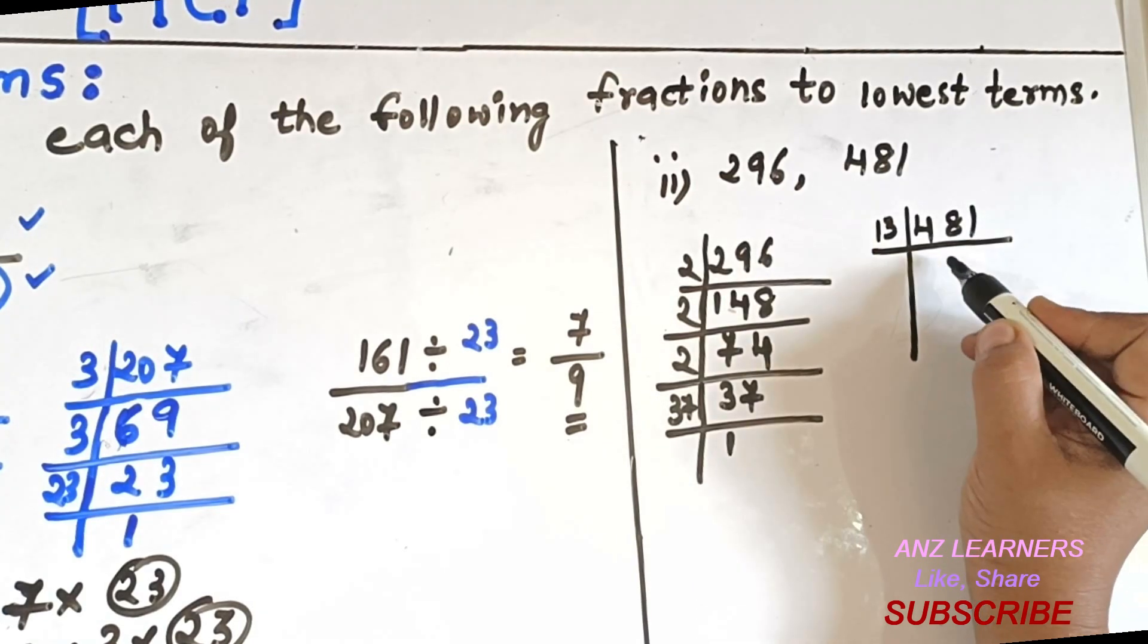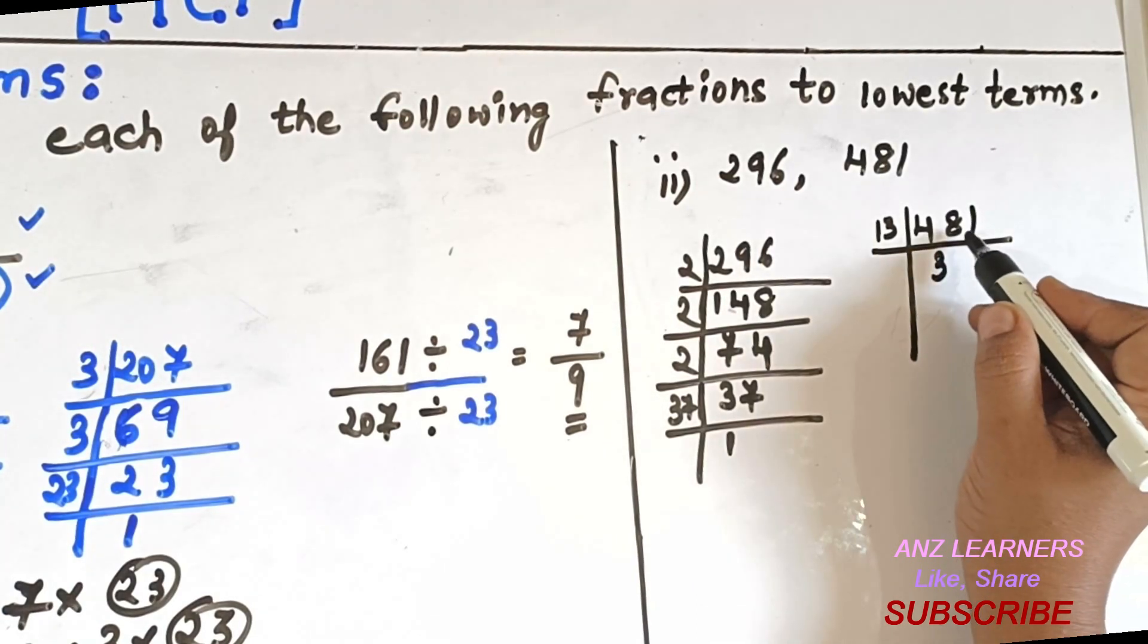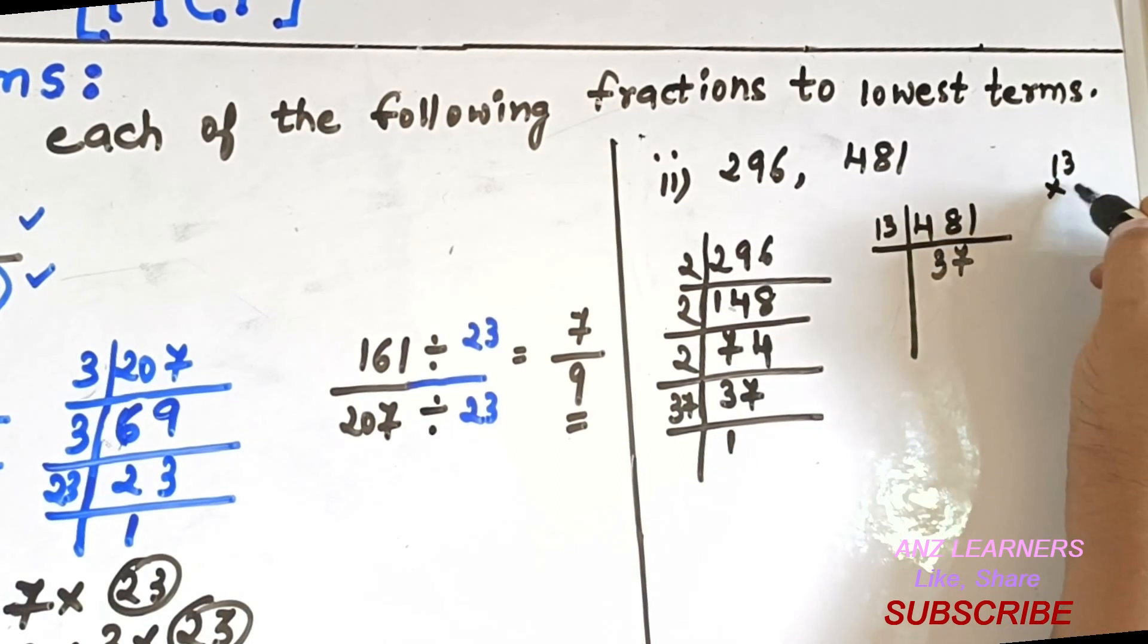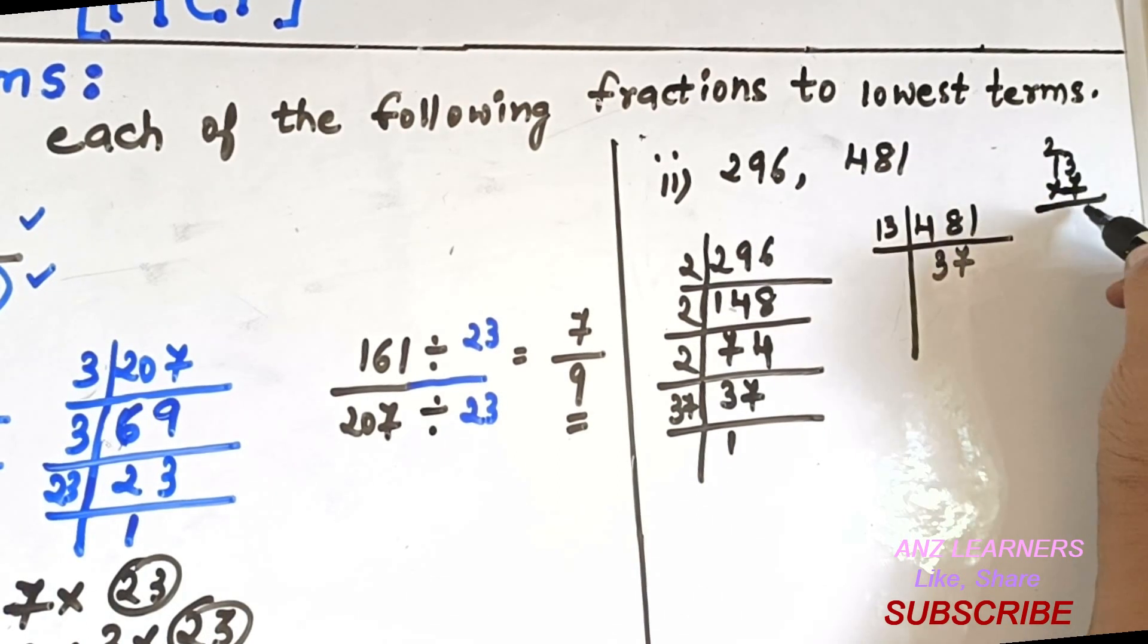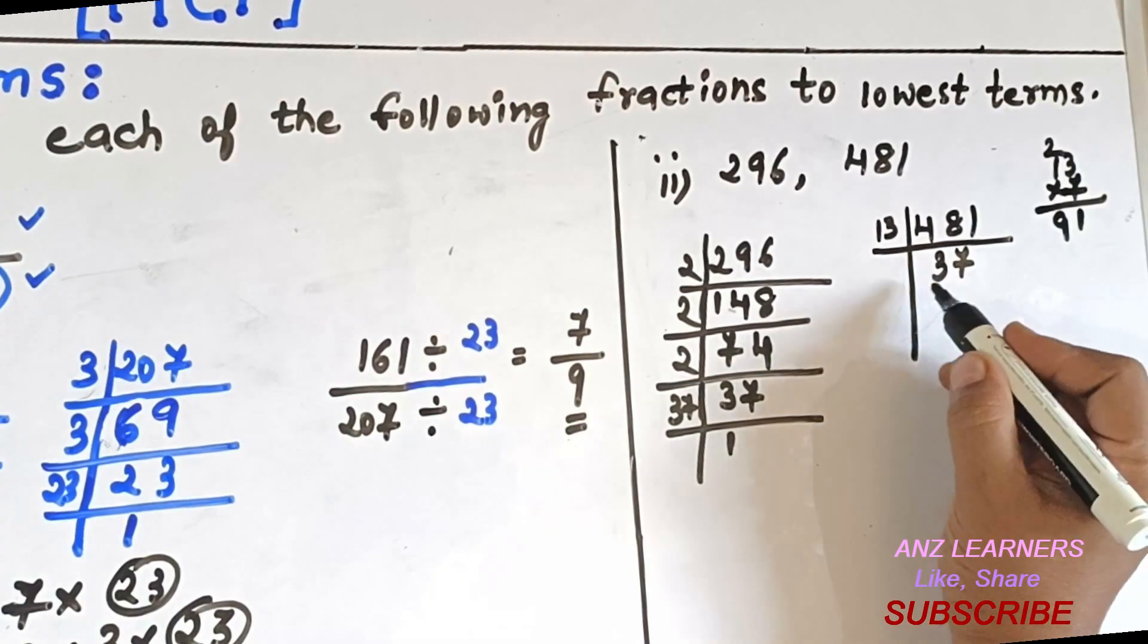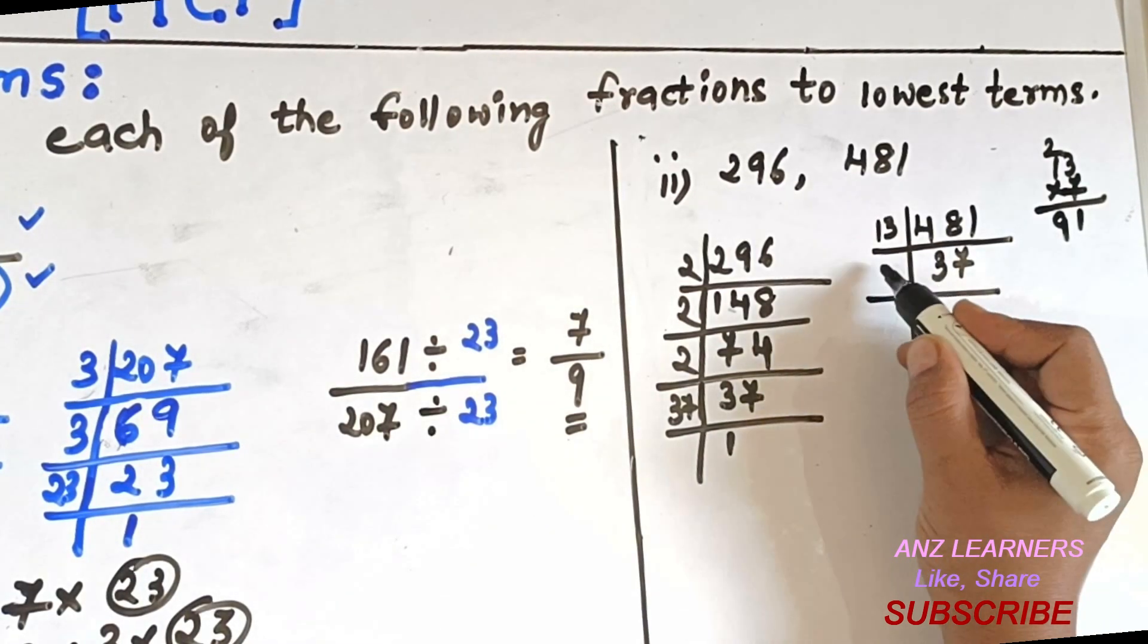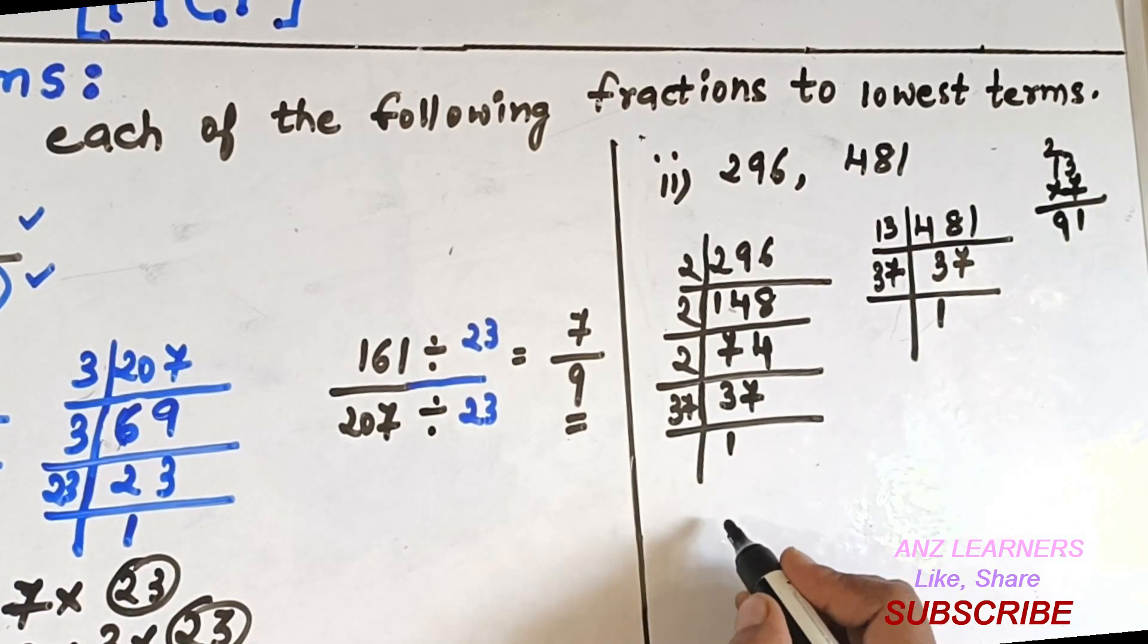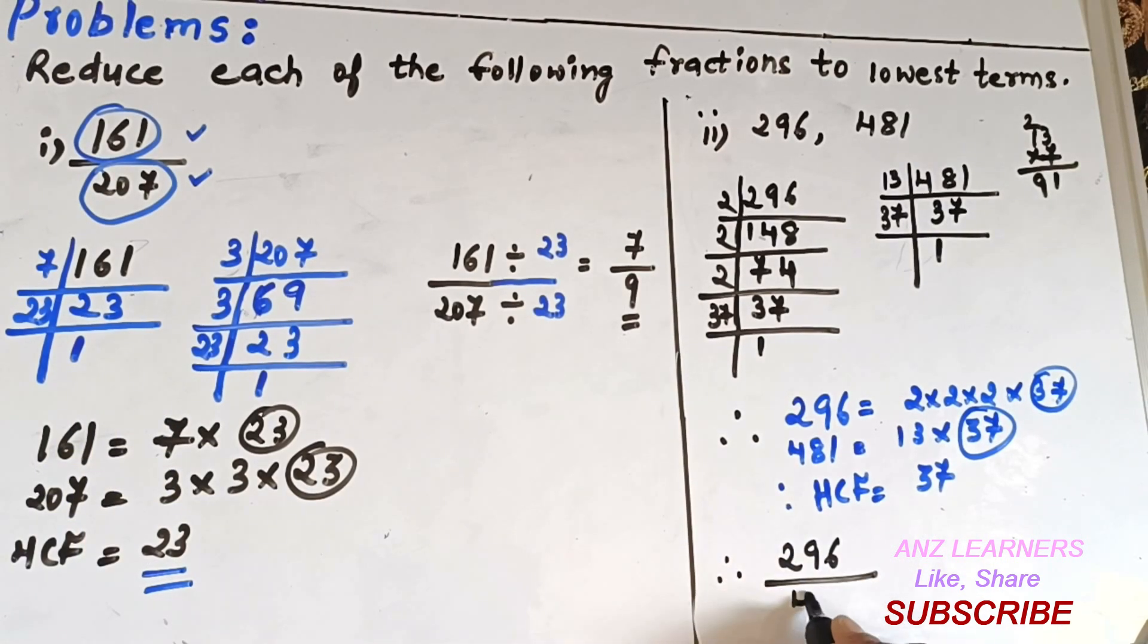For 481, dividing by 13, we get 481 equals 13 times 37. Since 37 is a prime number, we'll stop here. So we have 296 equals 2×2×2×37, and 481 equals 13×37. The HCF is 37.